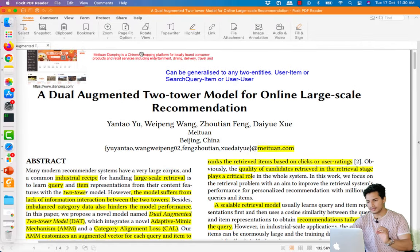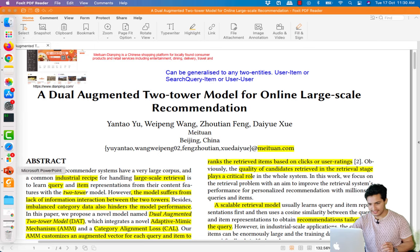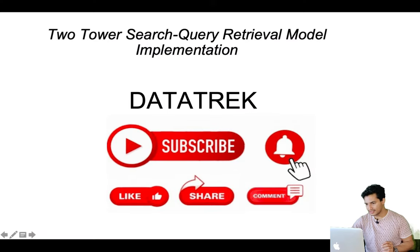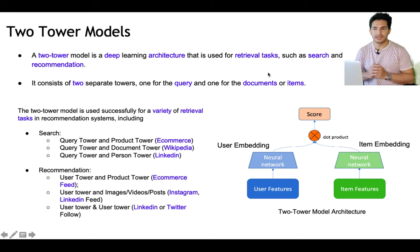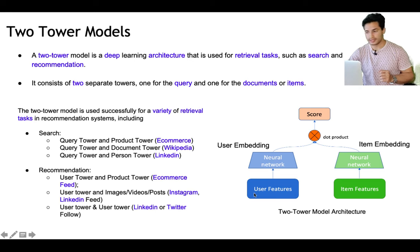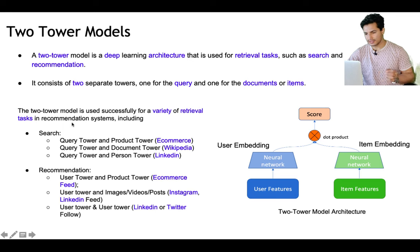I will add the link to the paper explanation video in the description. Let's understand what we will implement today. Two-tower models are deep learning architectures used for retrieval tasks such as search and recommendation. They consist of two separate towers — one is the query tower and another is the item tower — and are successful for a variety of retrieval tasks in recommender systems.